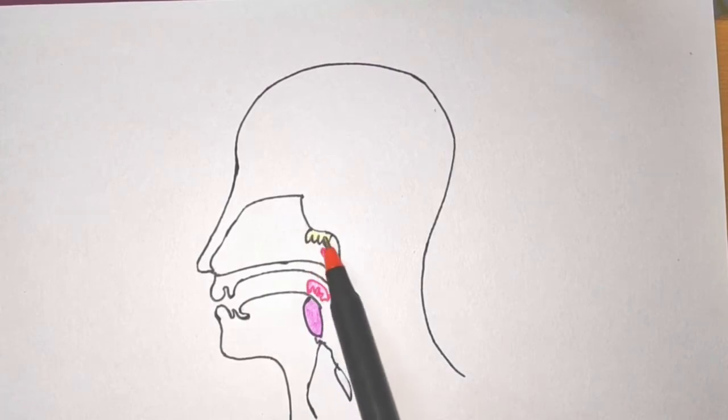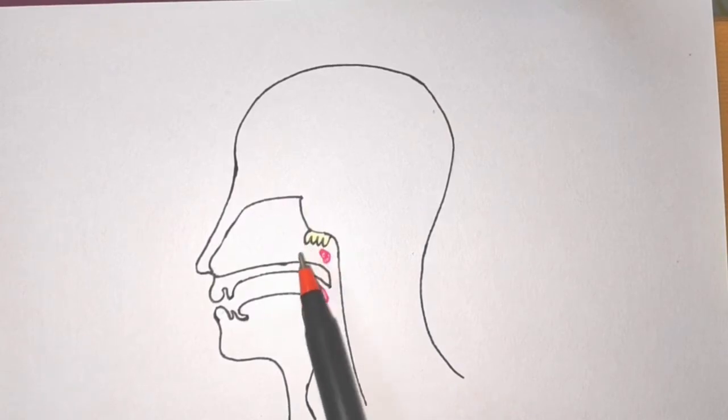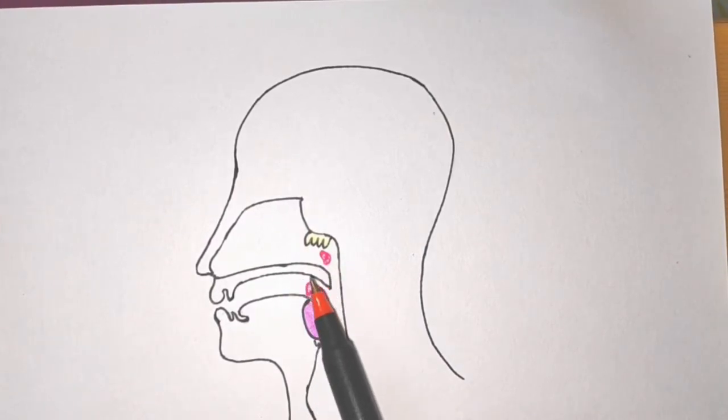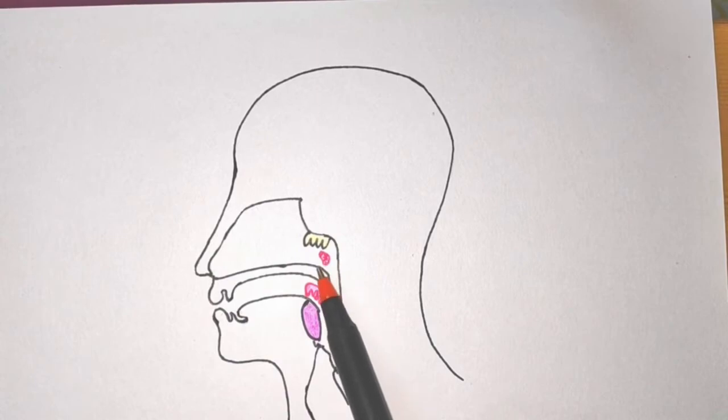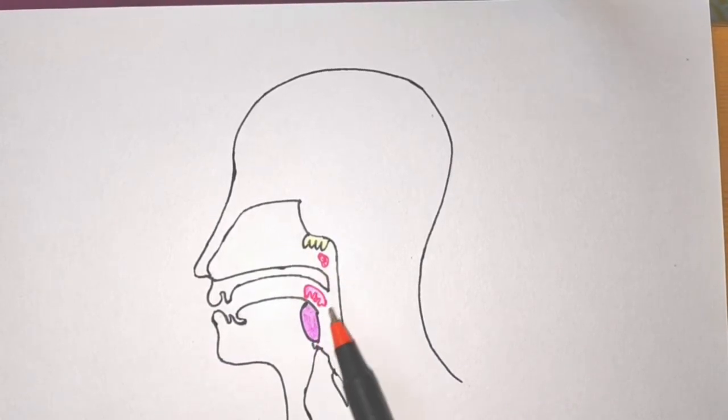The nasopharyngeal tonsil is located on the roof of the nasopharynx. You can see here the roof of the nasopharynx. The tubal tonsils are situated in each auditory tube which opens into the nasopharynx, and the palatal tonsils are commonly known as tonsils.